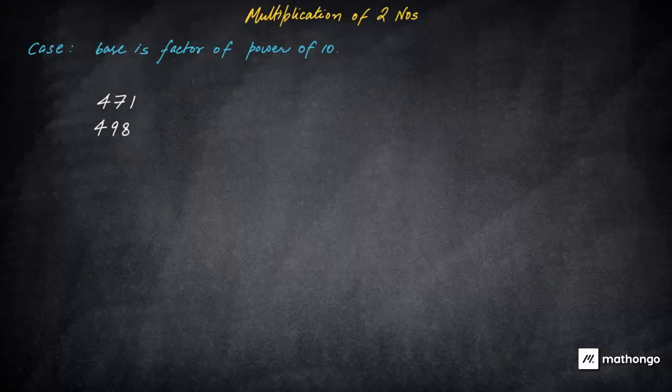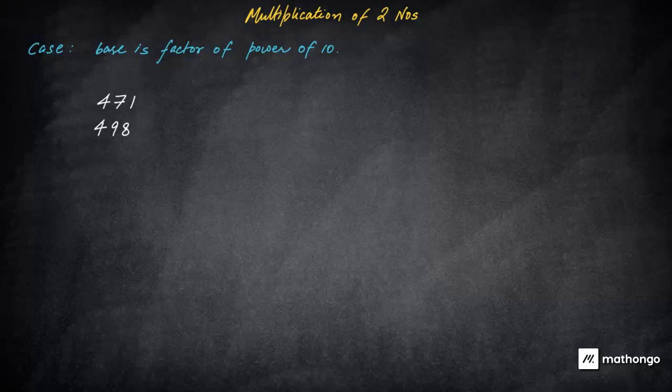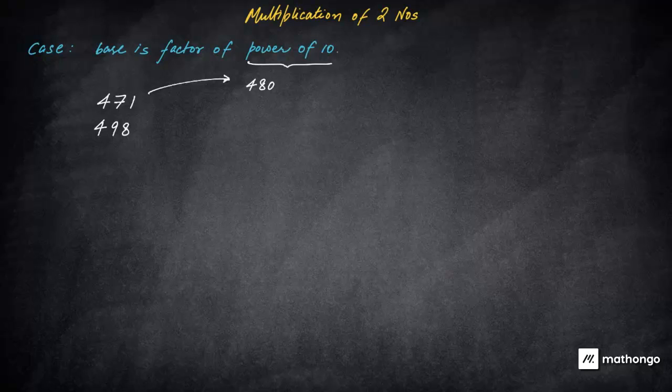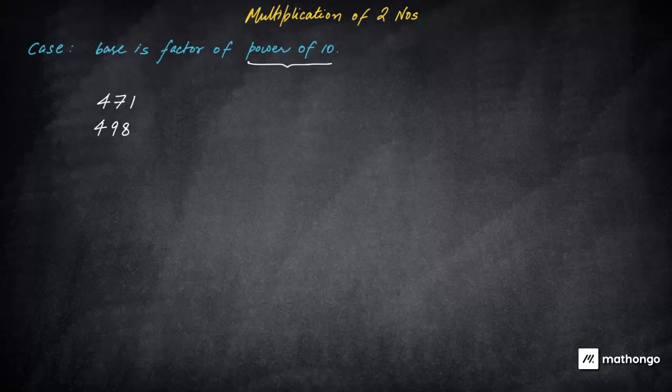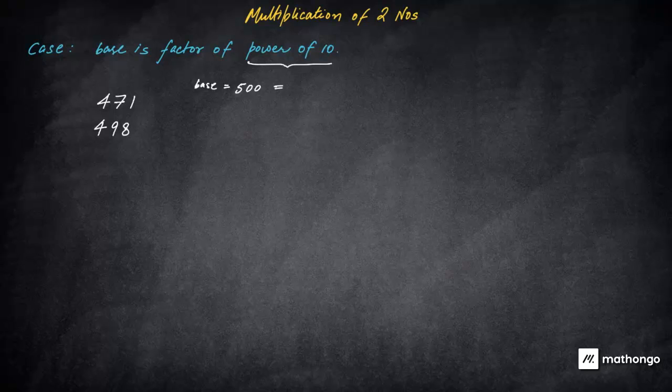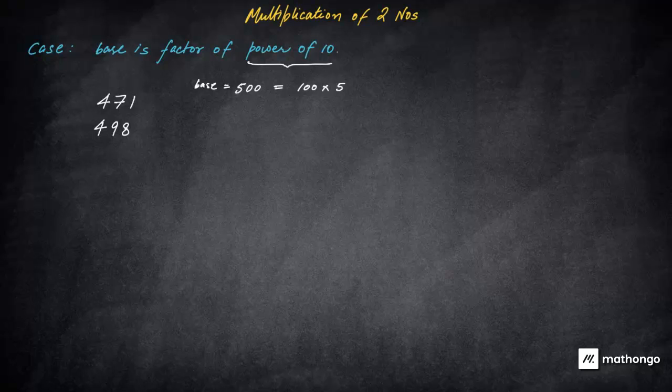So this is how you can actually multiply any number or any two numbers, which are closer to powers of 10. Okay, let's do the same calculation for three digit numbers. Now here, if you see, we have to find the factors of power of 10. So factors of power of 10. Please do not take something like 480 because it is closer to 471 and 490. We have to take factors of power of 10. That's not a factor of power of 10. So factor of power of 10 would be something 100 into four, 400. That is what you can take. Rather, these both of the numbers are closer to 500.